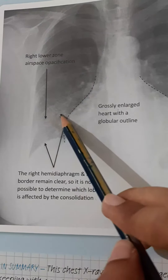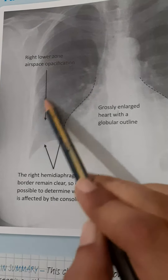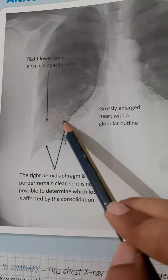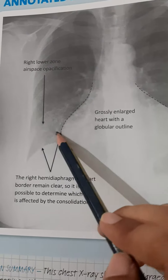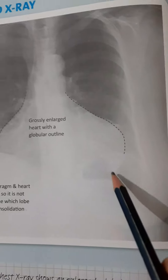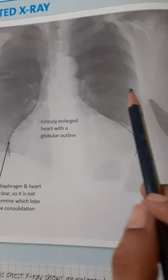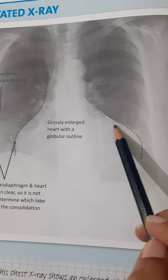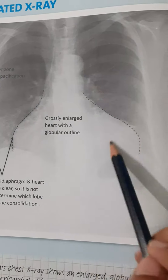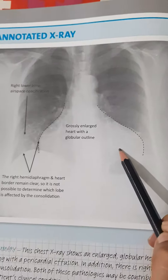There is right lower zone airspace opacification in the right lung, and the left lung is clear with normal hilar markings.